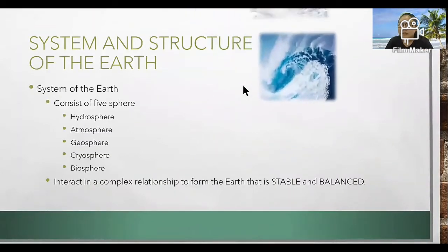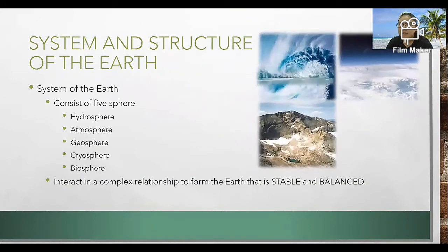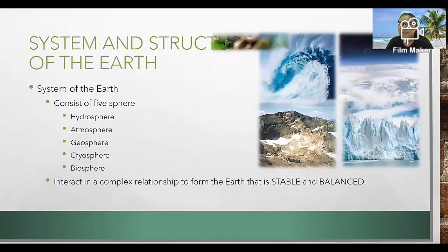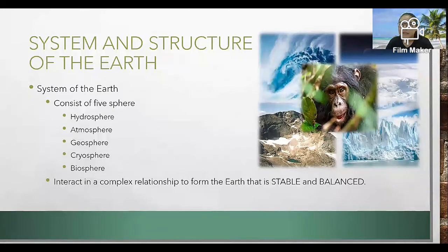The system of the Earth consists of five spheres: hydrosphere, atmosphere, geosphere, cryosphere, and biosphere. These interact in a complex relationship to form the Earth that is stable and balanced.